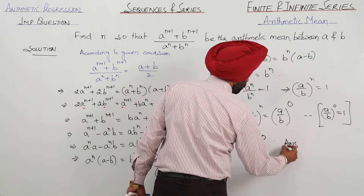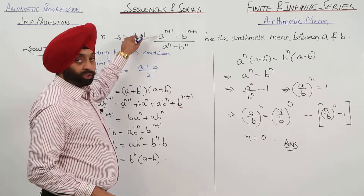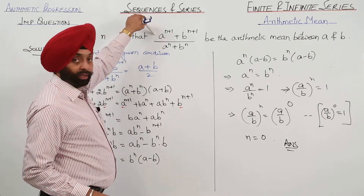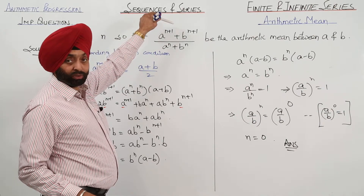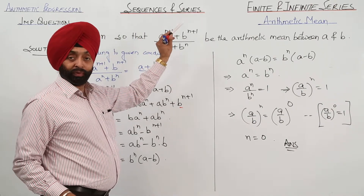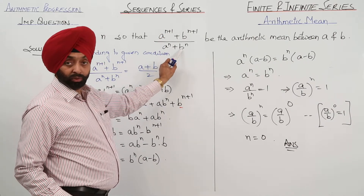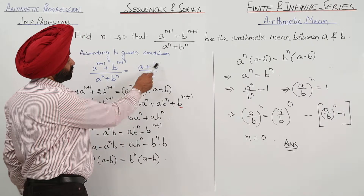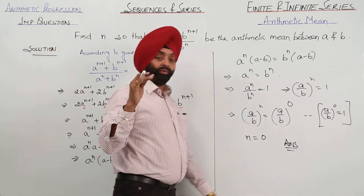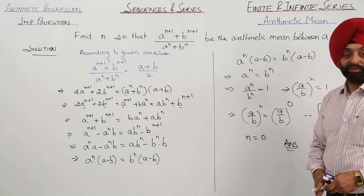Now, let's verify this. If we take n as 0, then a raised to power 0 plus 1 is a, and b raised to power 0 plus 1 is b. In the denominator, a raised to power 0 is 1 and b raised to power 0 is 1. So we get a plus b upon 2 — verified. Always try to verify every problem. This is how we get the result.